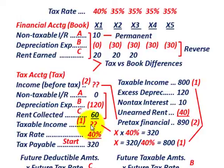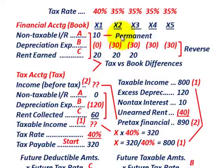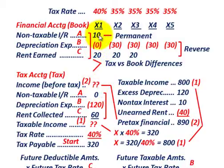Now we know our taxable income, but we have to account for the differences between our tax accounting and our financial accounting. Starting with the non-taxable interest revenue — item A — for tax accounting we don't recognize it as part of our income since it's non-taxable, but for financial accounting we recognize $10,000 worth of non-taxable interest revenue. That's a permanent difference — it's not going to reverse itself over the next years, and it's never going to be recognized for tax accounting, but it is recognized for financial or book accounting.